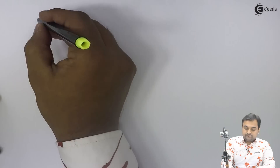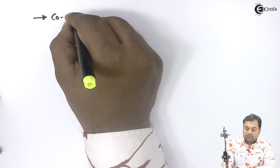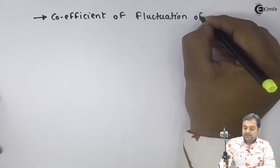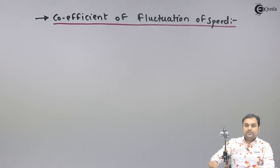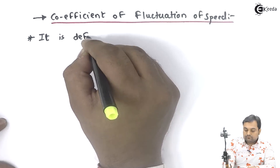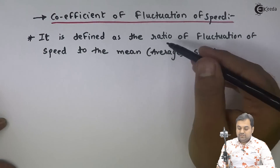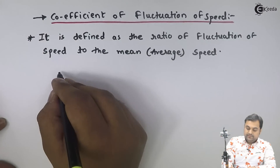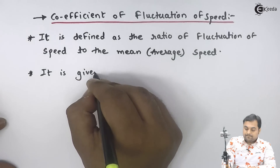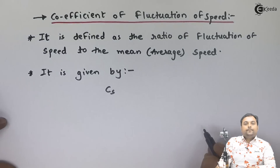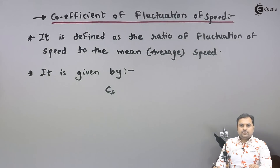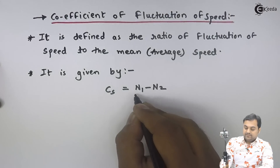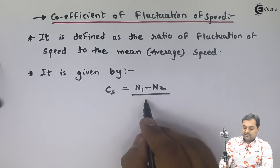Next, the coefficient of fluctuation of speed is defined as the ratio of fluctuation of speed to the mean or average speed. It is given by C subscript S, which equals the fluctuation of speed — that is N1 minus N2, maximum speed minus minimum speed — divided by the average speed N.